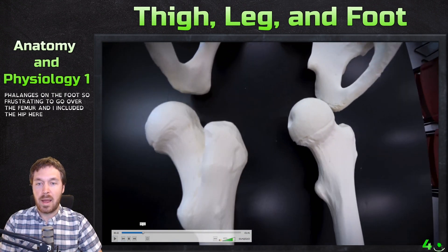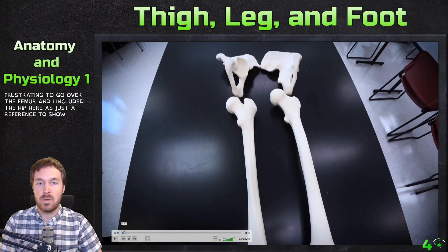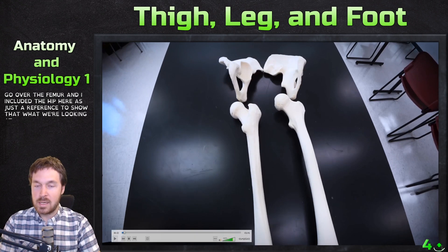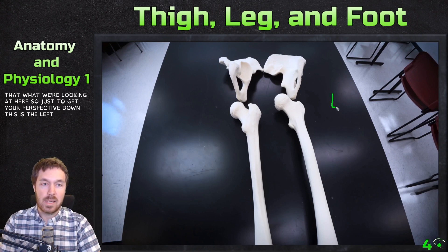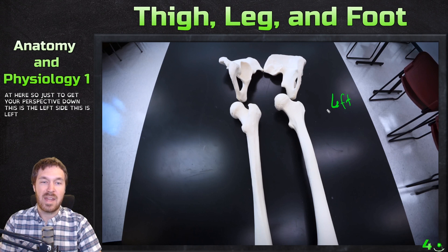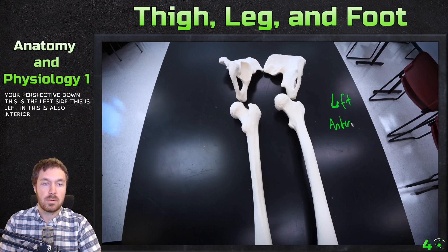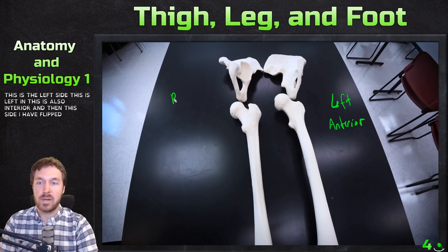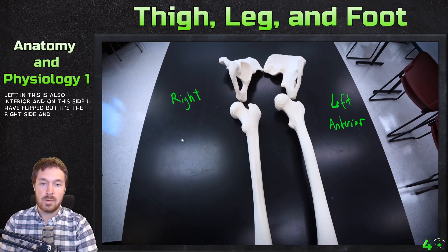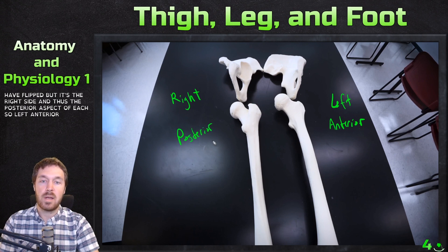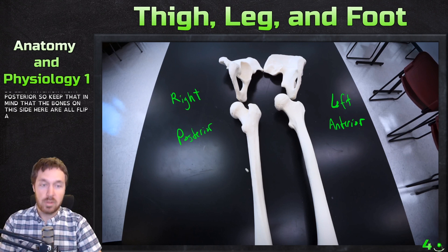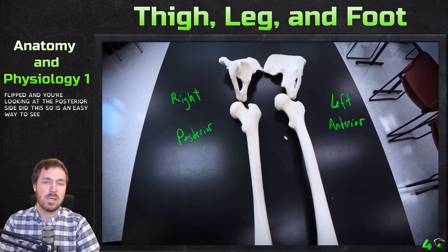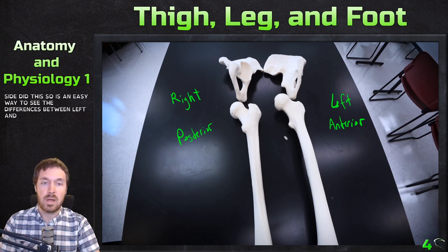I've included the hip here just as a reference. This is the left side, anterior view, and this side is flipped — it's the right side showing the posterior aspect. So left anterior, right posterior. Keep that in mind: the bones on this side are all flipped and you're looking at the posterior side, making it easy to see the differences between left and right.